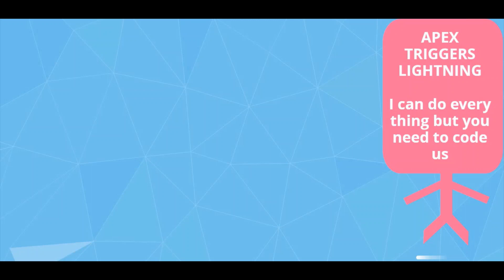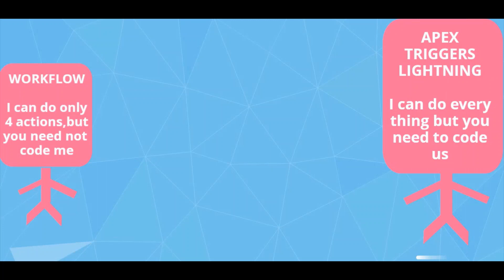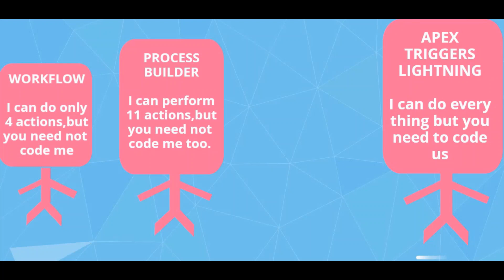We have Apex triggers, Lightning components, and Lightning Web Components — with these we can perform any custom implementation, but the downside is you need to code. If you don't know how to code but still want to do some kind of implementation, Salesforce has come up with standard features. First is workflow: no code required, but you're limited to only four actions. Then process builder was added — it can perform almost eleven actions, more than workflow. But even process builder is limited: it cannot delete records, perform custom rollup summaries, or clone records.